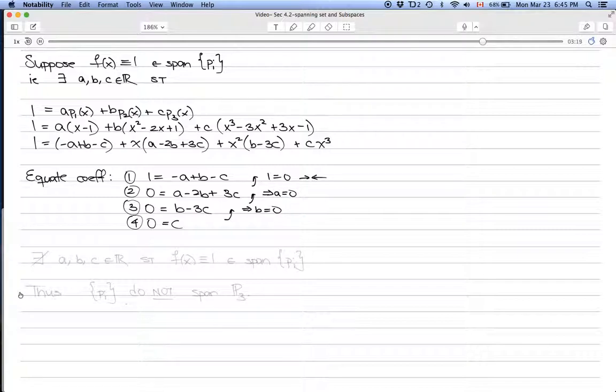What we've shown is that there do not exist constants a, b, c (real numbers) such that f(x), which is identically equal to 1, is in the span of the pi's.